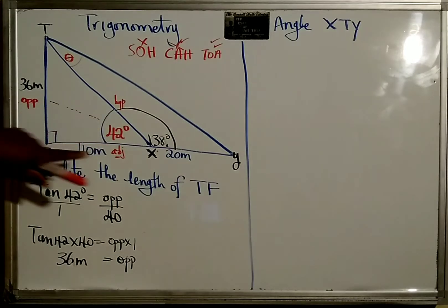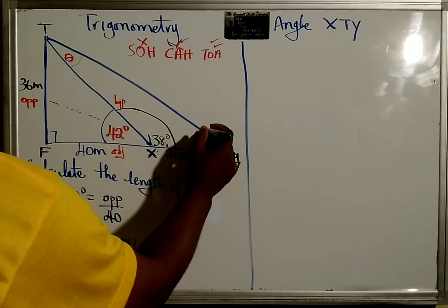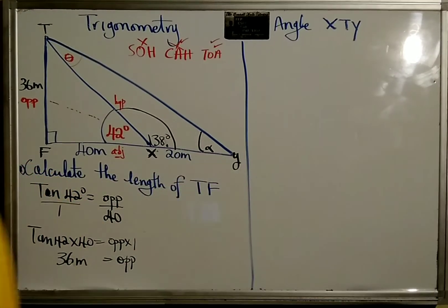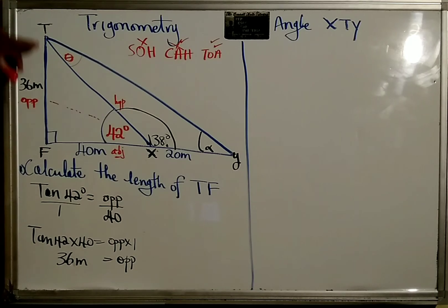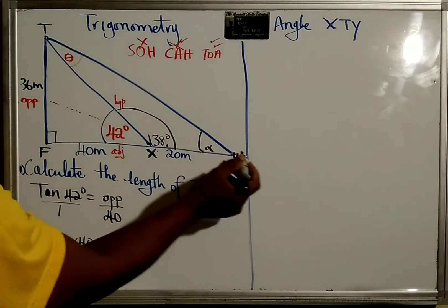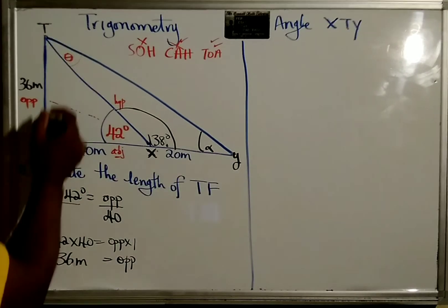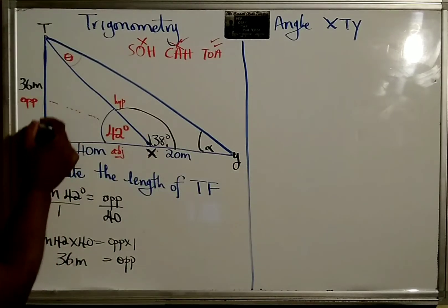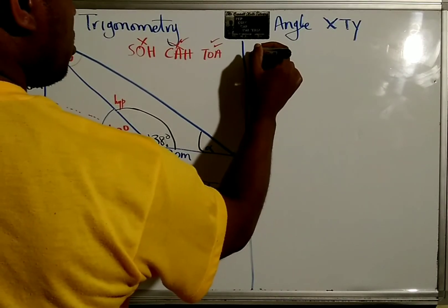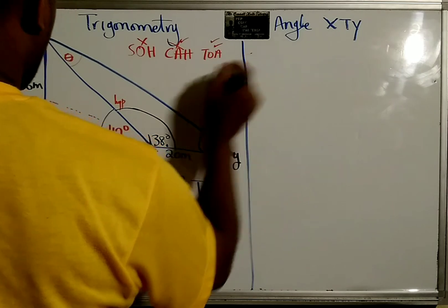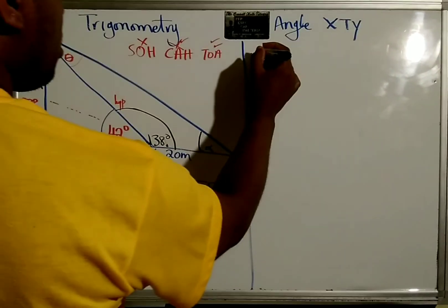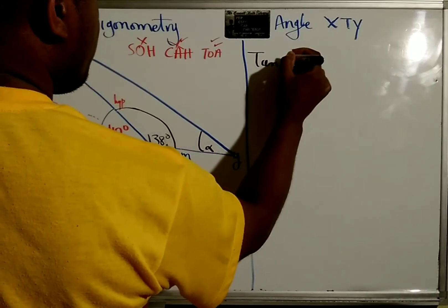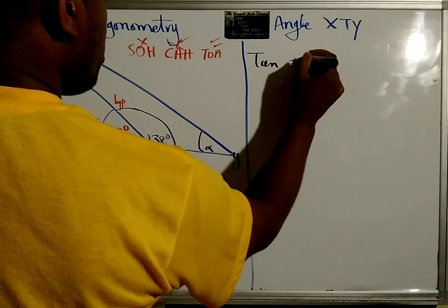Now we can look at the big triangle and find this angle right here. If we look at the big triangle TYF, this would be our opposite. Opposite over adjacent, so it's tan again - opposite which is 36...